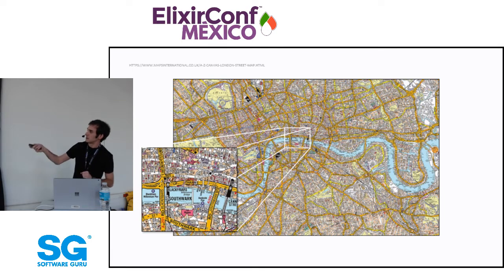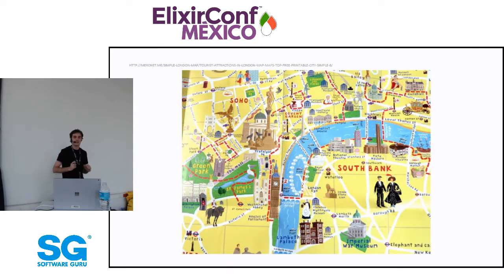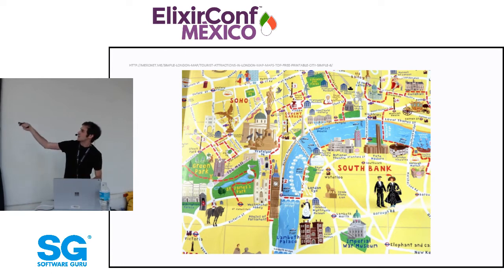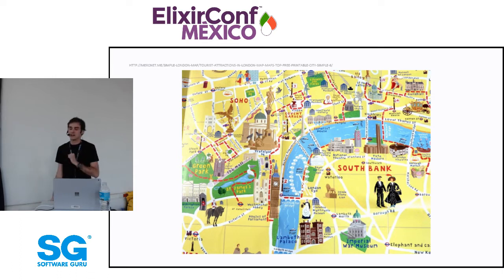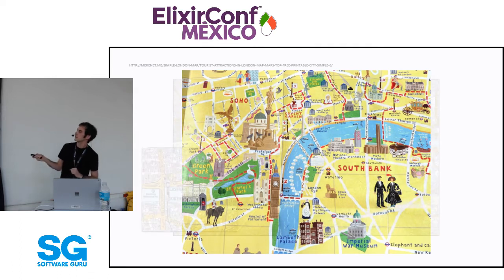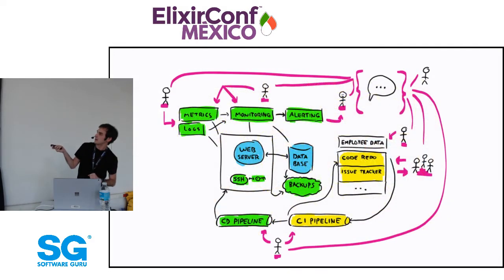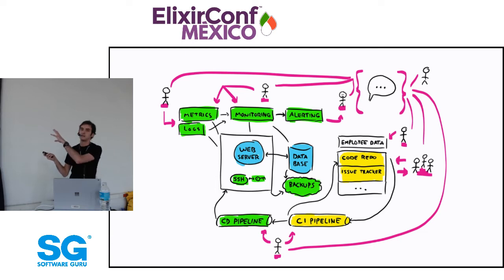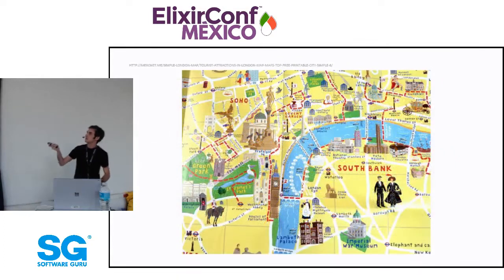What we actually work with is more like a tourist map of London — it tells you where Big Ben is, where St. Paul's Cathedral is, the Tate Museum. You have the very broad roads but don't see all the details. This is much closer to what we work with as developers and operators. If you've been in an architecture meeting, someone might say this is too complex and just put a big box in the middle labeled 'Kafka' to simplify it. But that's what we work with.